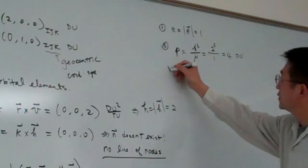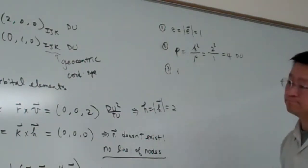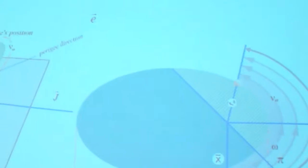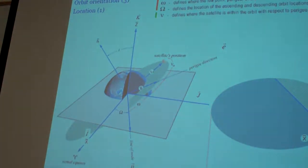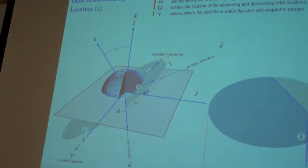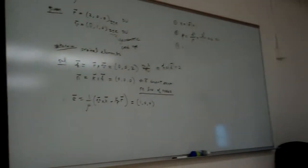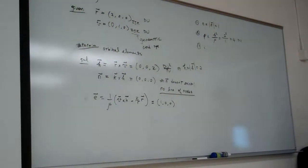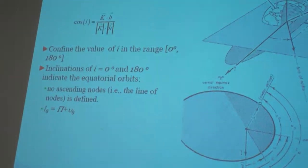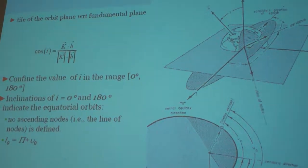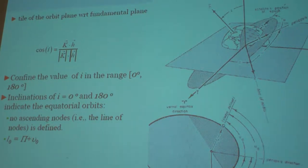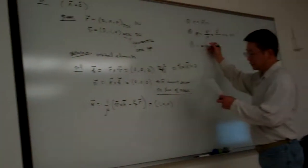Okay. So now, the third one, we determine i. i is this angle. i is the angle between h and k. So using this page, we simply, i is the angle between the two vectors. So we simply take the inner product of the two vectors. So therefore, i equal to...